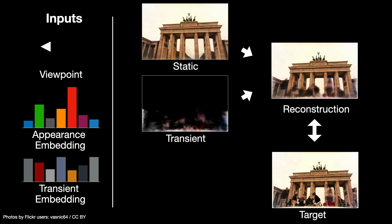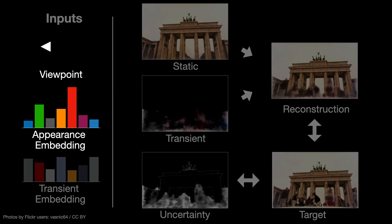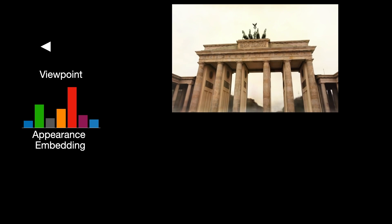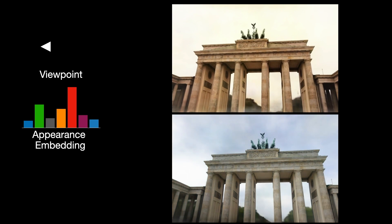For this to work, we need to modulate that reconstruction loss according to an uncertainty field that is also generated by our model and is conditioned on this particular image, and this allows training to identify and ignore the transient parts of any particular image. After training, we can use our model to render novel views of the scene by giving it different viewpoints, but also by changing the appearance embedding, we can change the appearance of the scene without changing the viewpoint or the scene geometry.